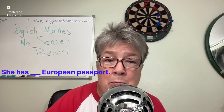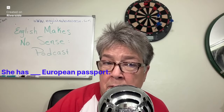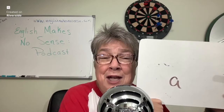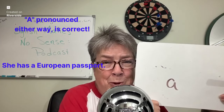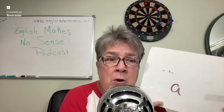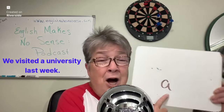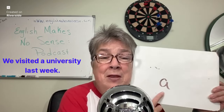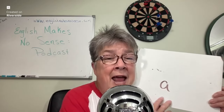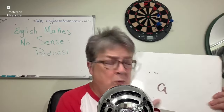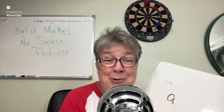She has blank European passport. Did you say A or A? She has a European passport, or she has a European passport — either one works. We visited blank university last week. Is it a university or an university? We visited a university last week. If we use 'an university,' that would be wrong.